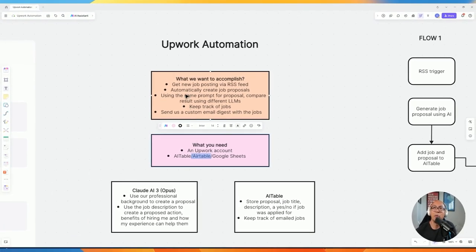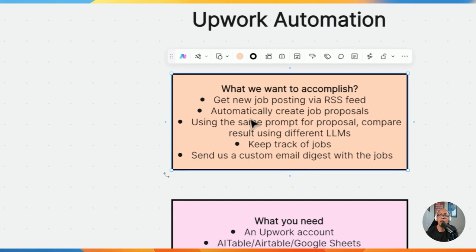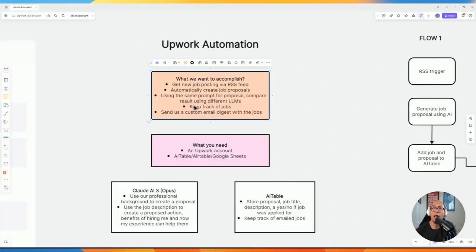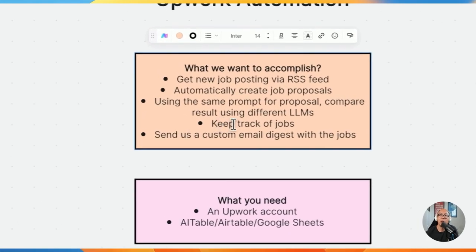We're going to be building our prompts using the job description and the job title, as well as our own job qualifications, so that we can create a proposal specific to the job we're applying for. We'll also be keeping track of the jobs using Airtable in this automation.